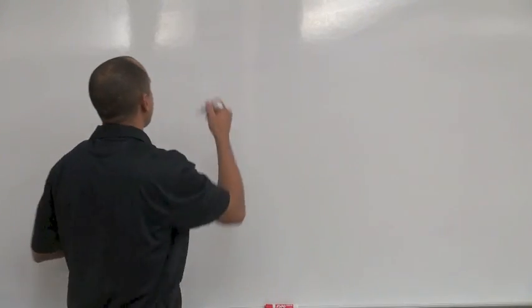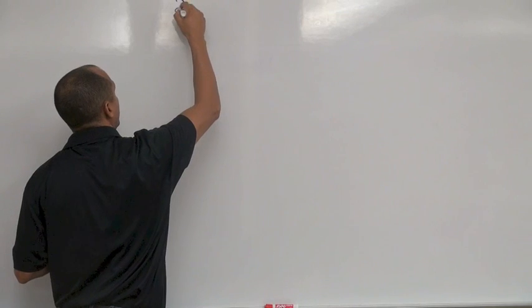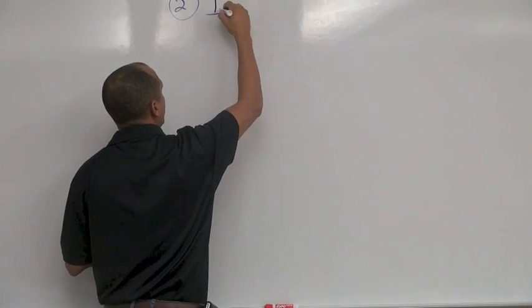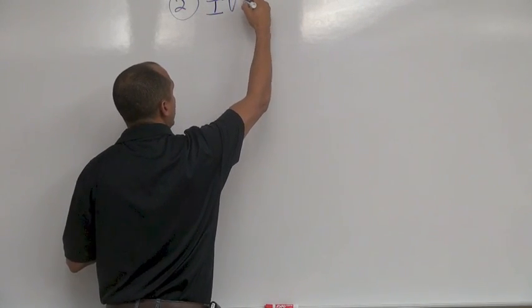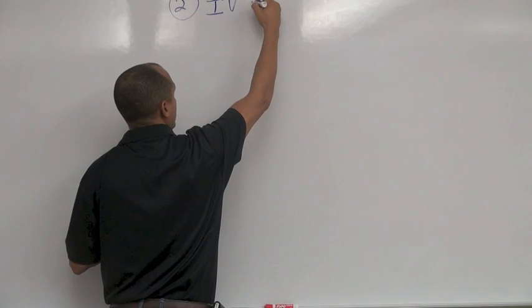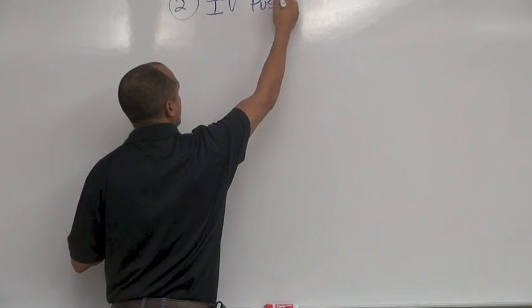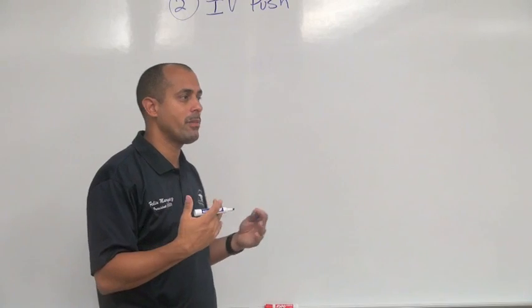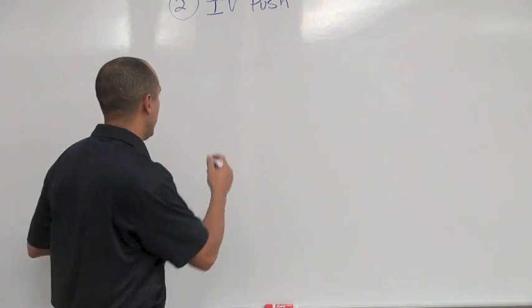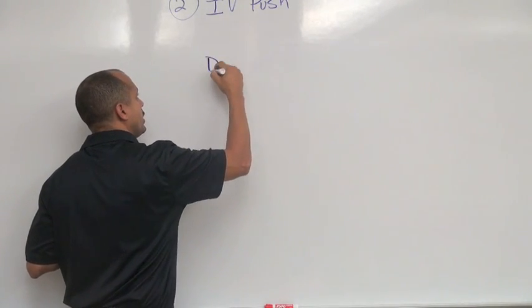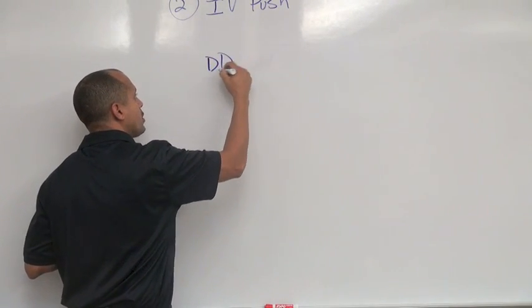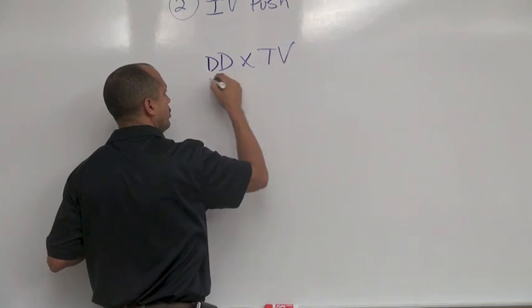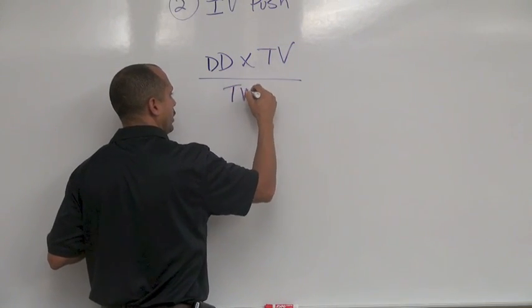We have formula number two — a very simple formula. This is the formula we're going to use when we have to give a medication IV push or bolus. IV bolus and IV push mean the same thing. So what's the formula? Desired dose times total volume over total weight.